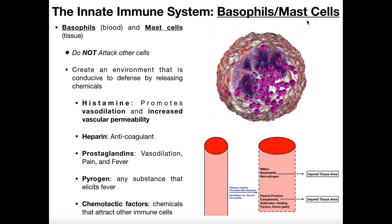Basophils and mast cells have pretty much the exact same function. The only difference between basophils and mast cells is where we find them. Basophils are one of the five major types of white blood cells that we find in the blood — basophils are in the blood. You'd also like to have something that functions in the same way in the tissues, so over time basophils can actually be stimulated to migrate into particular tissues.